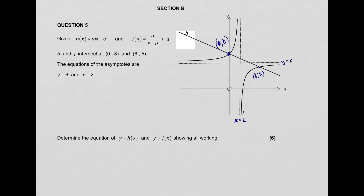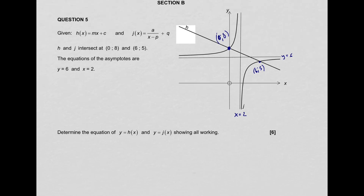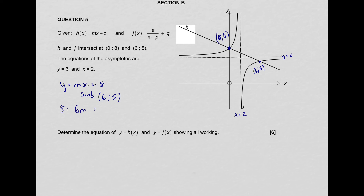Determine the equations of h(x) and j(x). For the straight line: we already know the Y-intercept is 8, so start with Y equals mx plus 8. Substitute the point (6, 5) — you can't substitute (0, 8) because it would zero out the gradient. So 5 equals 6m plus 8, giving m equals negative 1/2. Therefore the equation of h is Y equals negative 1/2 x plus 8.